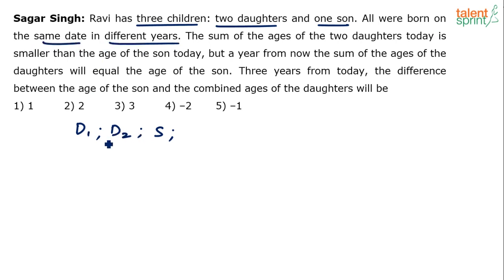All were born on the same date in different years — meaning their difference in ages, or anything to do with their ages, will be an integral multiple of years. It will be an integer: one year, two years, three years, four years. It cannot be one and a half years or two and a half years. It cannot be a non-integer value — the difference or the sum of their ages has to be an integer value.